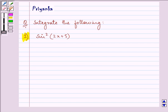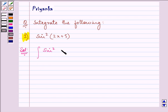We are given sin squared 2x plus 5. Here we need to integrate it. So let us start with our solution. We need to integrate sin squared 2x plus 5.